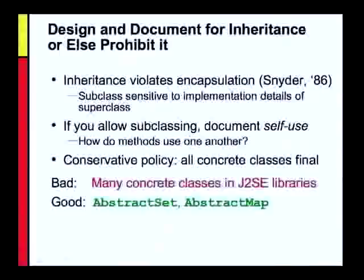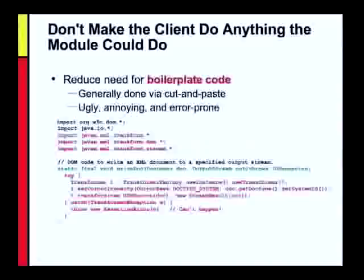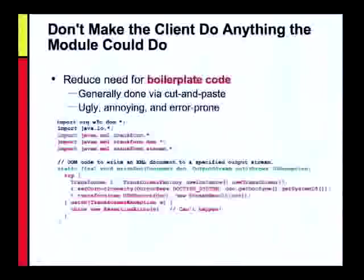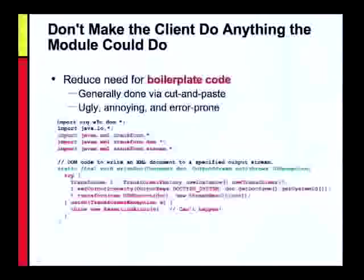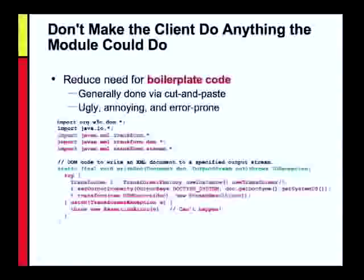On to methods. If you remember only two things from this talk, this is the second one — what was the first? When in doubt, leave it out. The second one is: don't make the client do anything the module could do. Those two things are the fundamental rules of API design. The worst thing you can do is write an API that requires the client to make repeated calls, passing junk from the first call to the second. This causes boilerplate code, which is really, really bad. Why? Because it's an opportunity for bugs — you make boilerplate by doing cut-and-paste-and-modify, and if you didn't do all the modification you should, it may still compile but won't do the right thing. It is ugly, annoying, and error-prone.